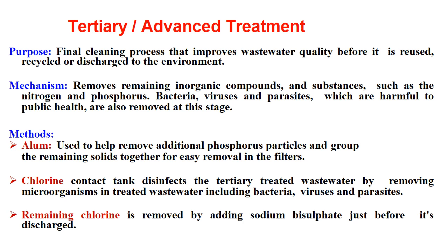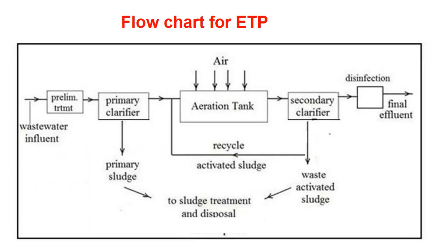Finally, the remaining chlorine is removed by adding sodium bisulfate just before discharge. In another lecture I am going to talk about advances in effluent treatment plant — modern advances will have a separate lecture. Here we can see a flow chart with different levels of effluent treatment: incoming wastewater, preliminary treatment, primary treatment, sludge going out, activated sludge used in biological treatment, secondary clarifier, disinfection as tertiary treatment, and final effluent going out for reuse or discharge.